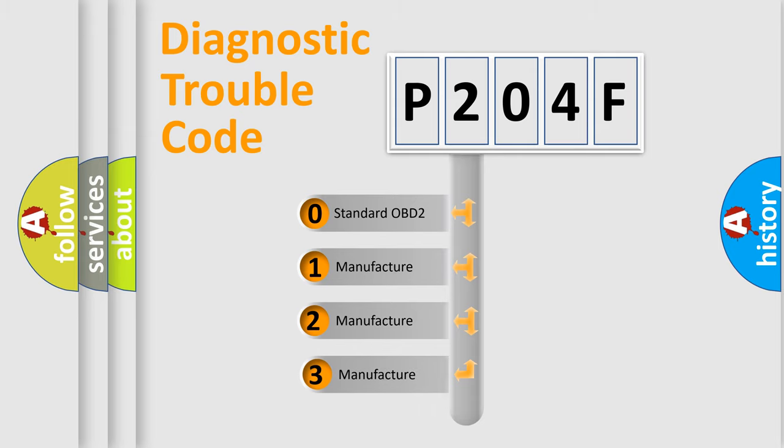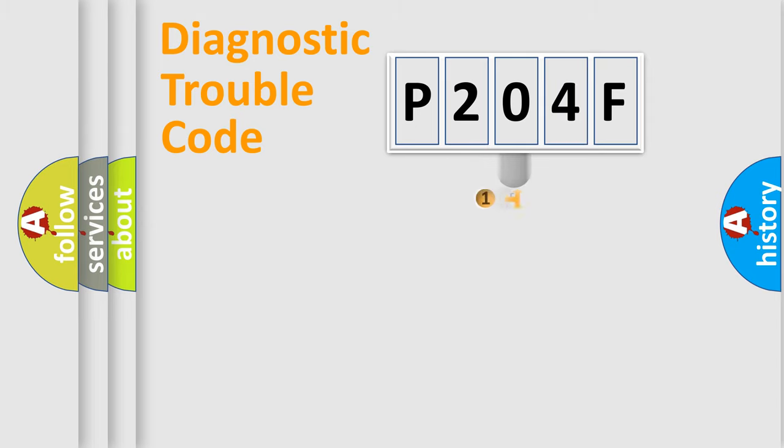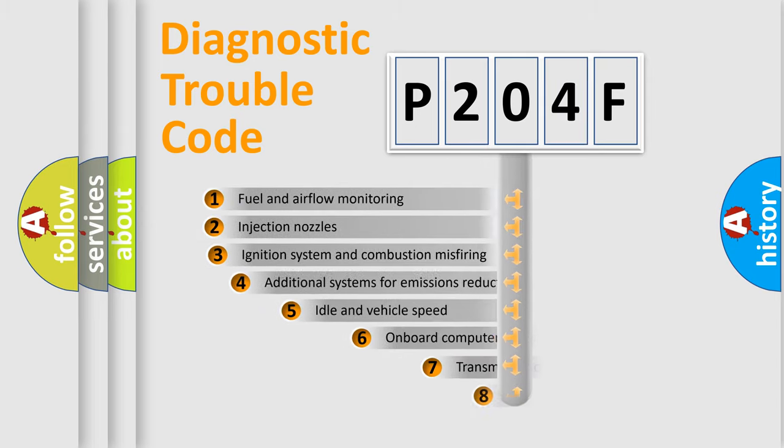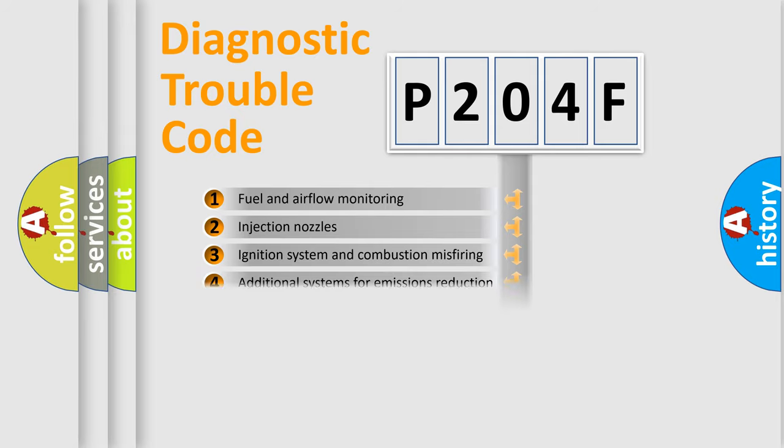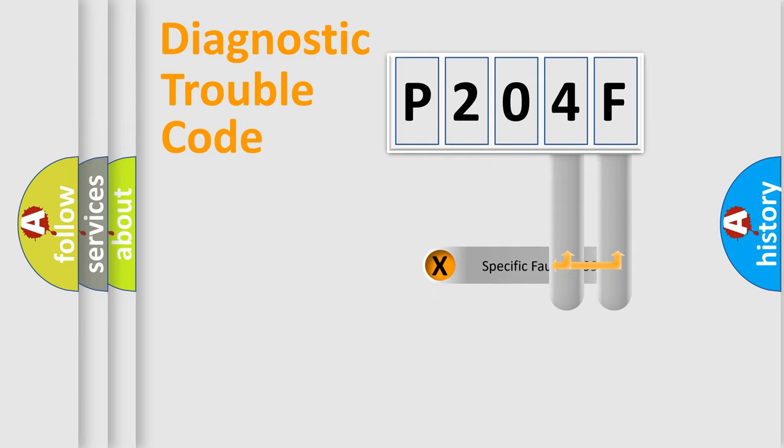If the second character is expressed as zero, it is a standardized error. In the case of numbers one, two, three, it is a car-specific error. The third character specifies a subset of errors. The distribution shown is valid only for the standardized DTC code. Only the last two characters define the specific fault of the group.